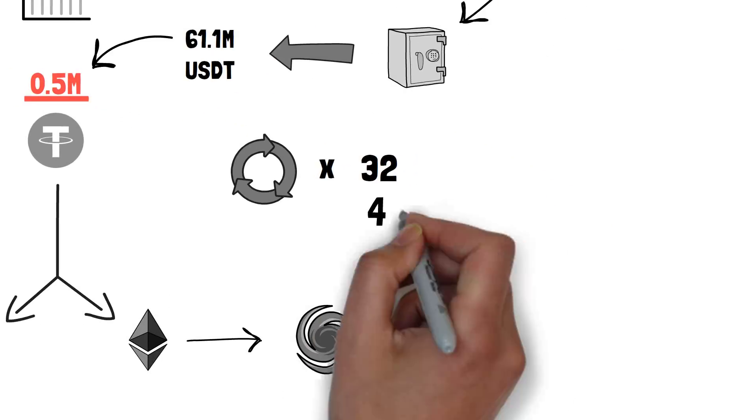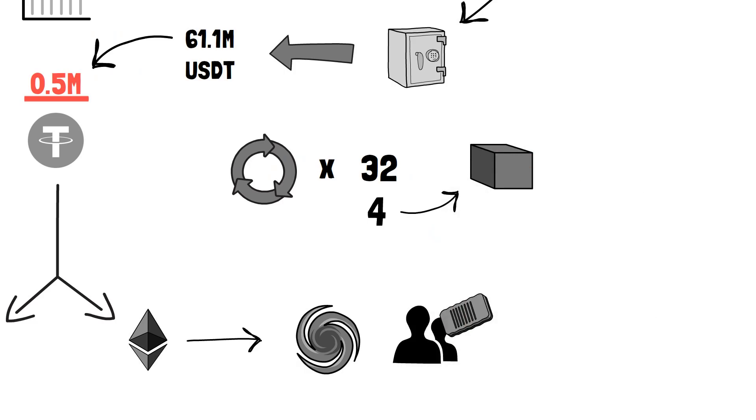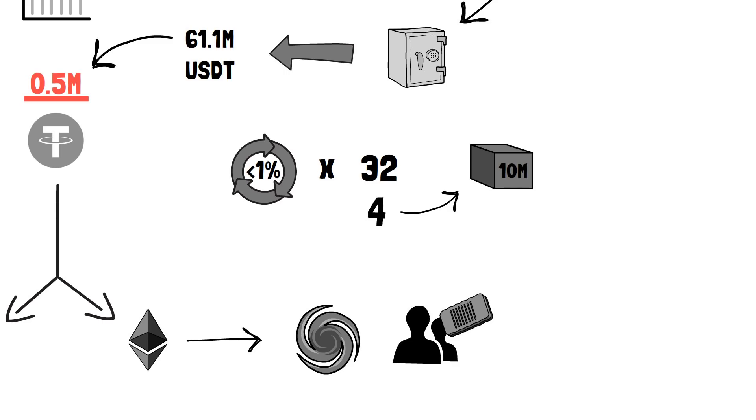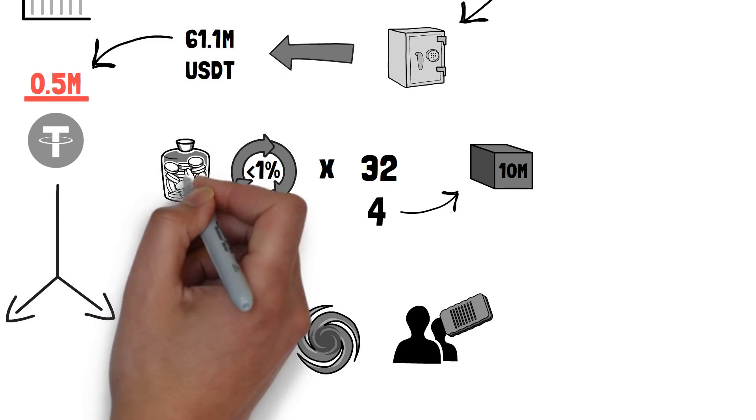Approximately 4 cycles can fit into a 10 million gas limit and although the profit on each cycle was less than 1%, around $500,000 per repetition adds up quite quickly.